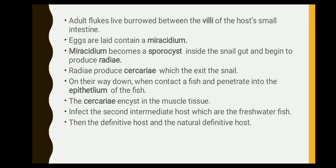The cercariae swim toward the surface of the water and slowly fall back down. On the way down, when they contact fish, they penetrate into the epithelium of the fish. The cercariae encyst in the muscle tissue, affecting the second intermediate host — the freshwater fish. Then the definitive host, the natural host, will get infected as well.